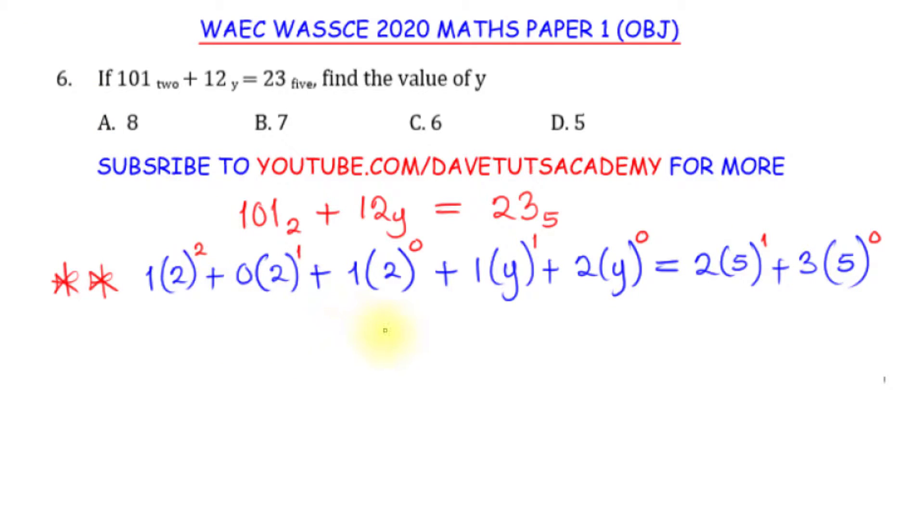This is 2 raised to power 2 is 4, 4 times 1, that is 4, plus 2 raised to power 1 is 2, 2 times 0, that is 0, plus 2 raised to power 0, any number raised to power 0 is 1, then 1 times 1, that is 1.